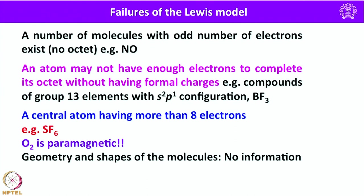Another important limitation is predicting the right structure of the oxygen molecule. Oxygen molecule is paramagnetic, but Lewis structure does not depict this paramagnetic property. More than all these things, the major drawback of the Lewis model is that it does not give any information about the geometry and shapes of molecules.